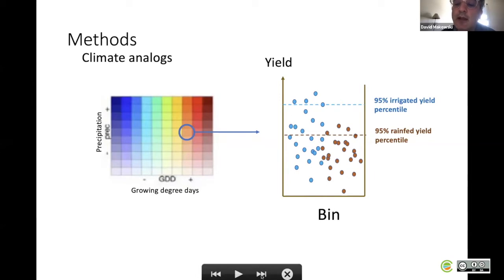One group based on irrigated yield data and one group including rainfed yield data. Then the 95th percentile of yield was computed for each one of the two groups. We get one irrigated yield percentile and one rainfed yield percentile, and from that we can compute the yield gap.